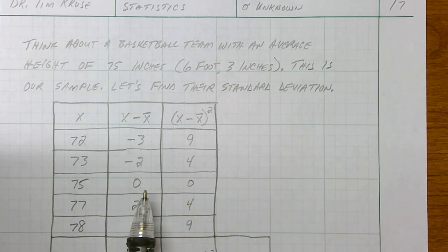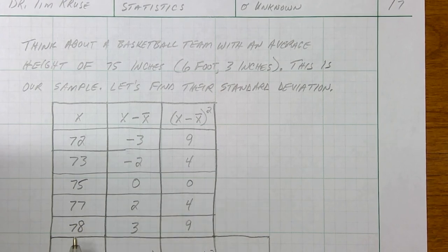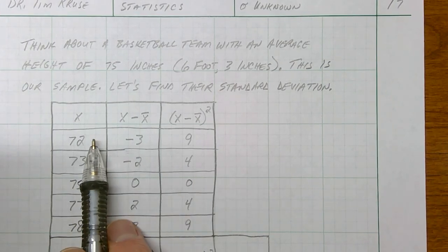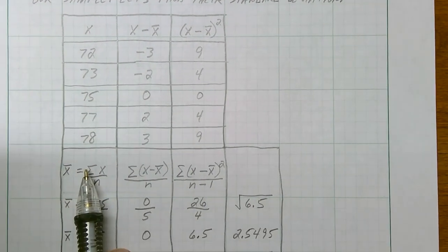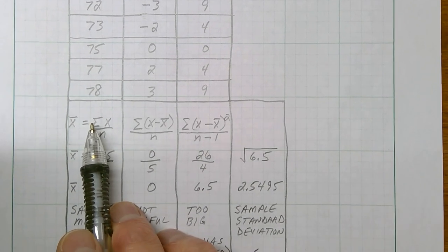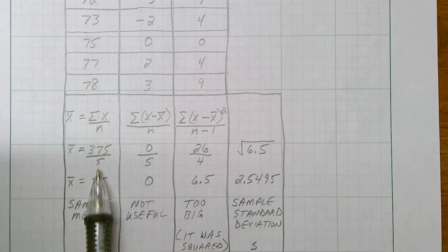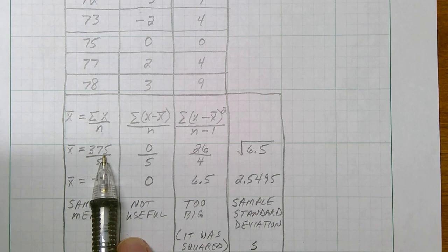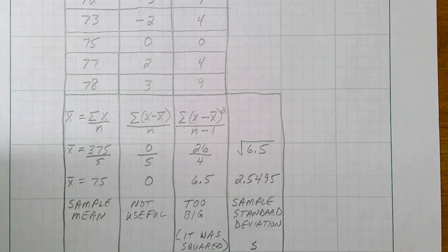We're going to do it on the calculator in a minute, but let's remember where standard deviation comes from by hand. To find the average height, we add these values up and divide by five. The notation is x-bar equals sigma x divided by n. Adding them up gives 375 divided by 5, so our sample mean x-bar is 75.